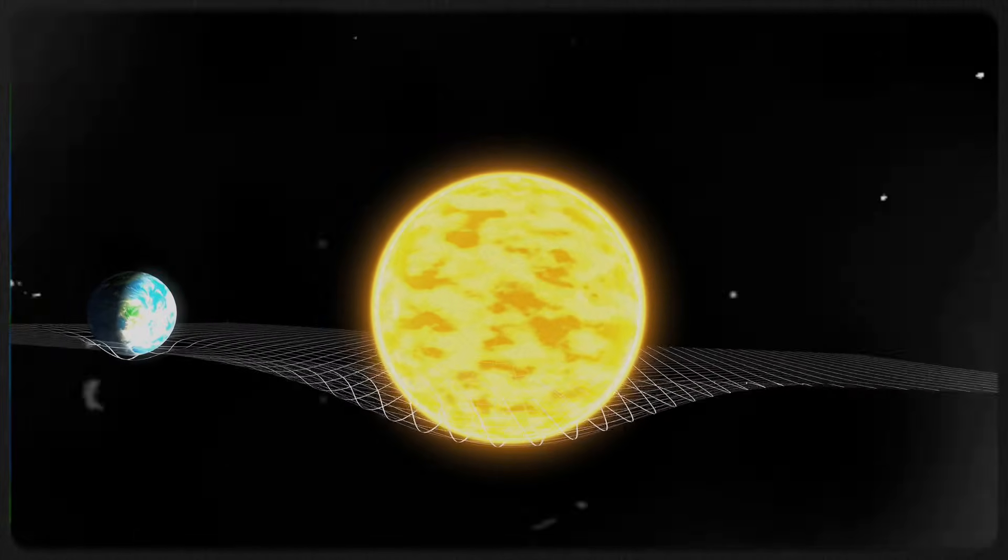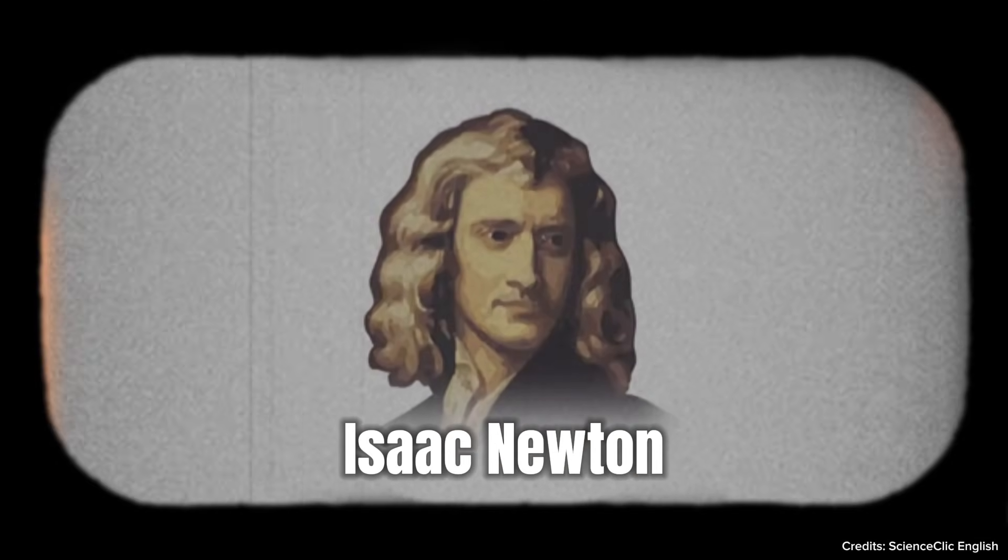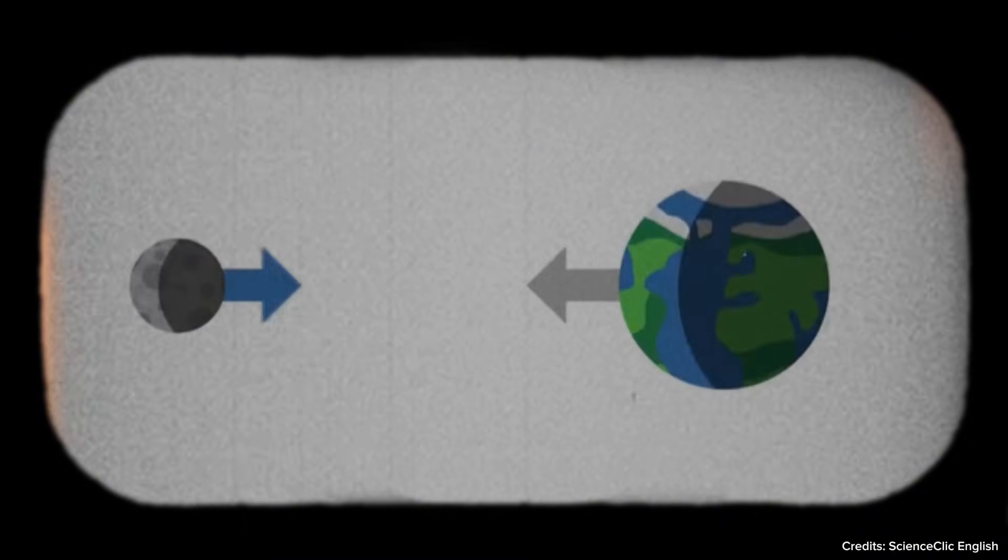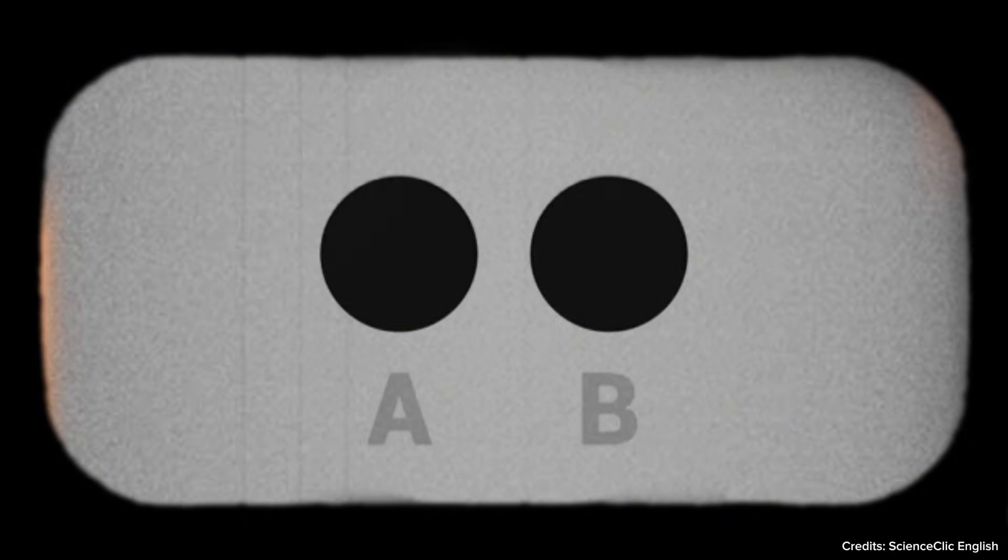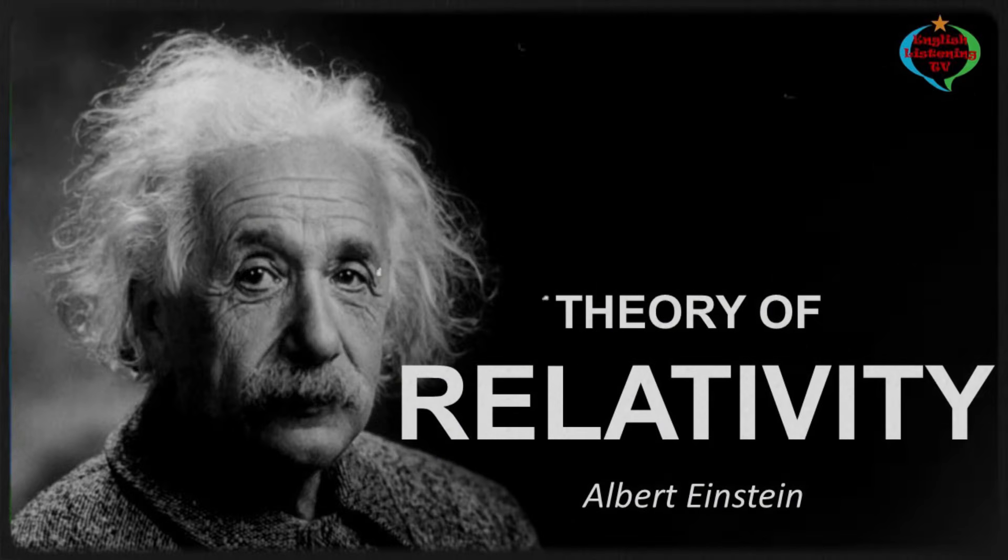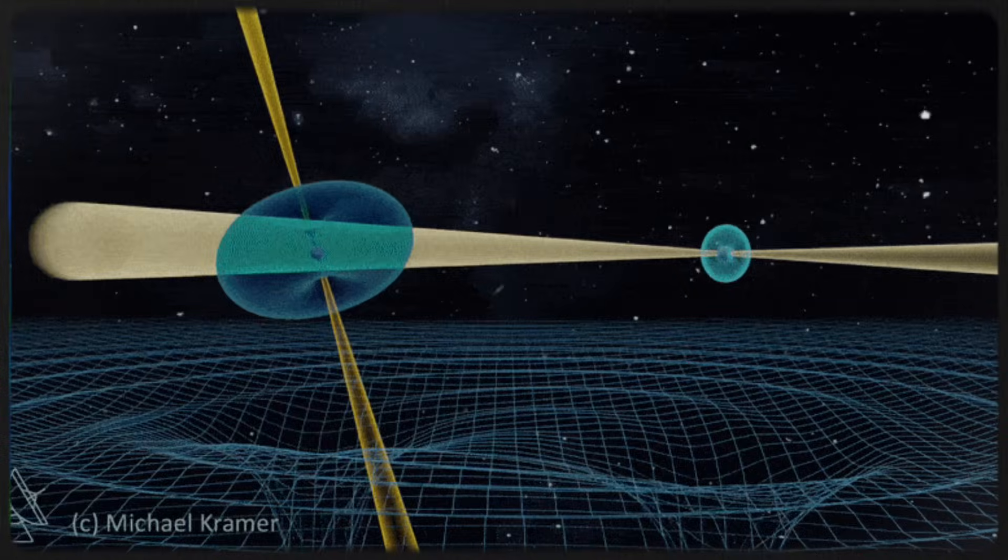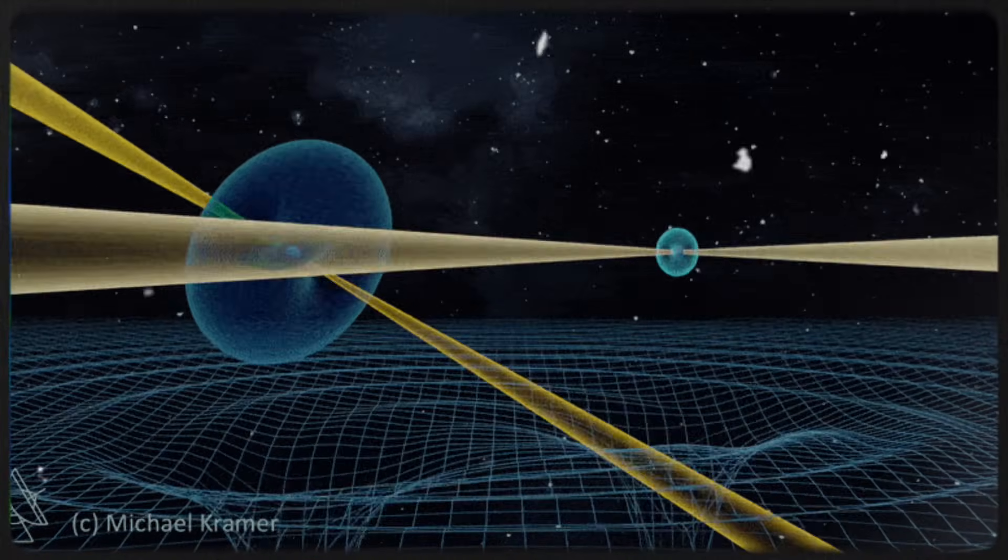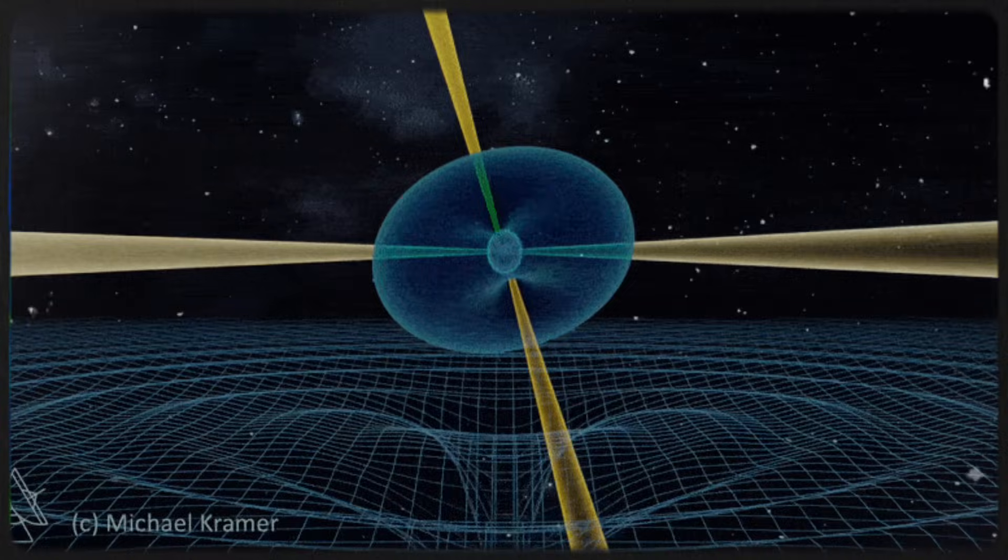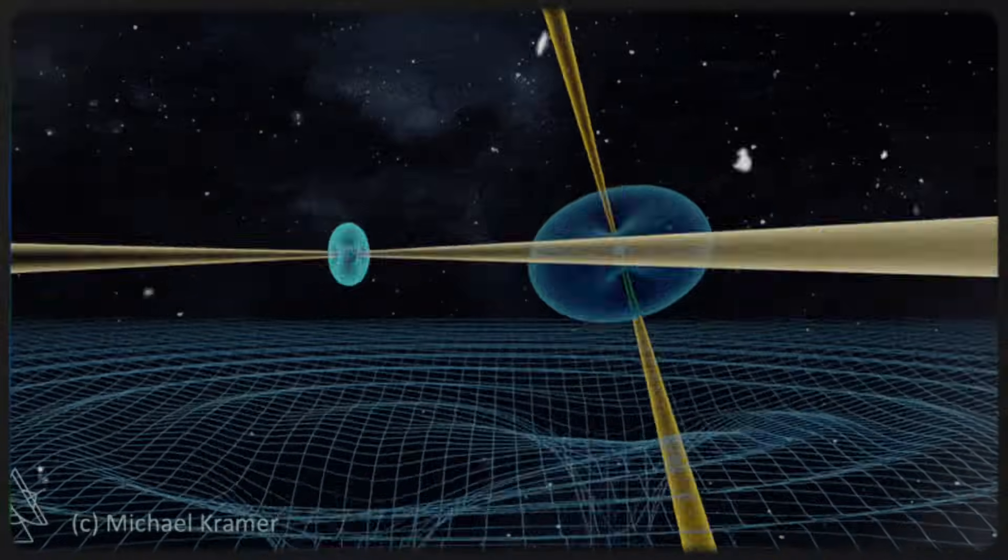Traditionally, gravity has been thought of as a force that comes from mass. Isaac Newton's law of universal gravitation tells us it's an attractive force between masses with strength proportional to their size and inversely proportional to the distance between them. Albert Einstein's general theory of relativity took this idea further, describing gravity as the warping of space-time caused by mass and energy. Massive objects like stars and planets create these gravitational effects by bending the very fabric of space-time.